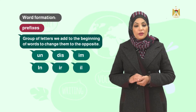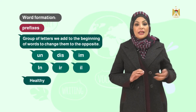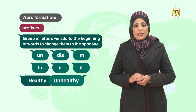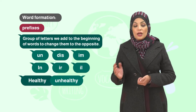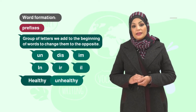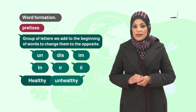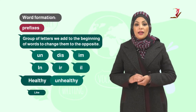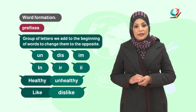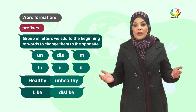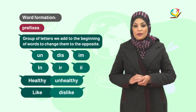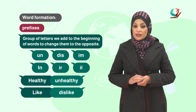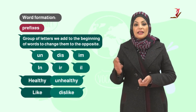For example, we have the word healthy. How do we change it to its opposite? By adding the prefix un-, it becomes unhealthy. Also, we have like — how does it become the opposite? By adding the prefix dis-, it becomes dislike.